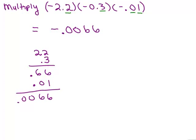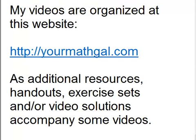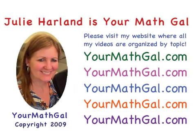So the rule for multiplying when you have negative numbers and decimal points is you have to decide whether it's positive or negative based on what you already know about multiplying with positive and negative numbers, and then just use your rules for multiplying with decimals. That's all there is to it. Please visit my website at yourmathgal.com where you can view all of my videos which are organized by topic.